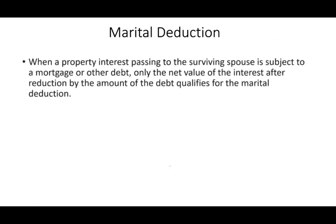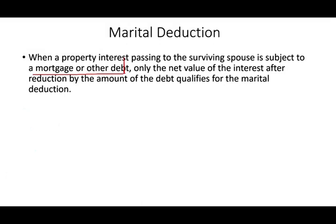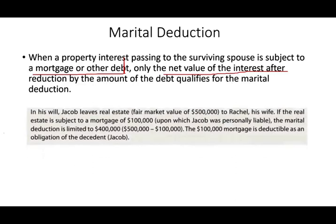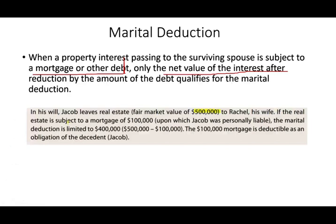Regarding the marital deduction, when the property interest passing to the surviving spouse is subject to a mortgage, we only count the net value of the interest after reduction by the amount of the debt. For example, in Jacob's will he leaves real estate with a fair market value of $500,000 to Rachel, his wife. If the real estate is subject to a mortgage of $100,000 for which Jacob is responsible, the marital deduction is limited to $400,000 — the fair market value minus the loan. The $100,000 mortgage is separately deductible as an obligation of the decedent; what really transfers is the net value.